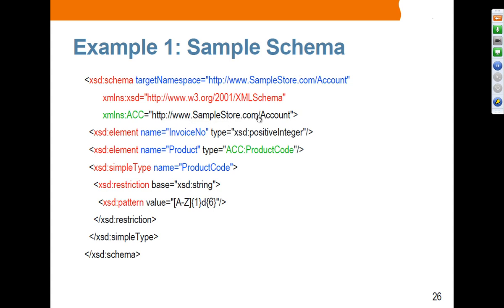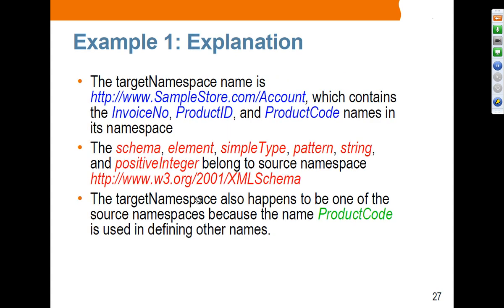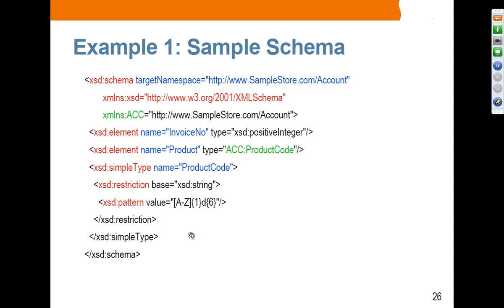The target namespace also happens to be one of the source namespaces, because the name product code is used in defining others. When defining the product element, we use another simple type in this document — in this case, product code. So what we are doing is using product code as a source namespace. That's why we define another source namespace using ACC. But they happen to be the same, because this product code is in the same namespace.